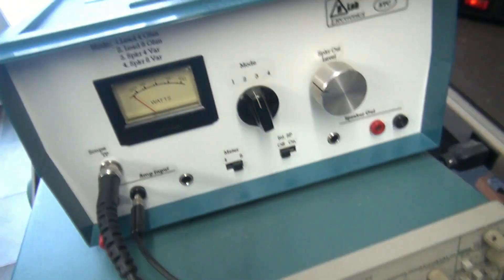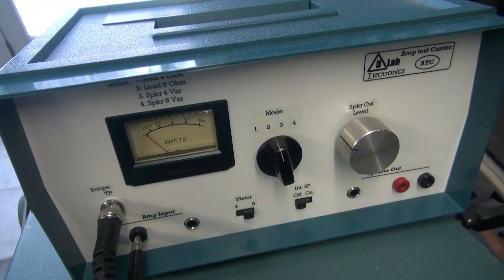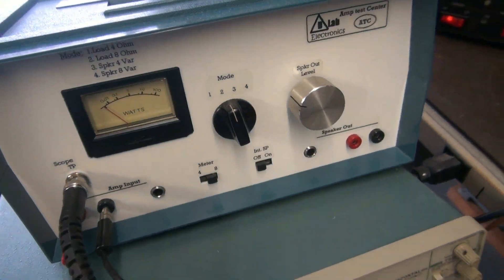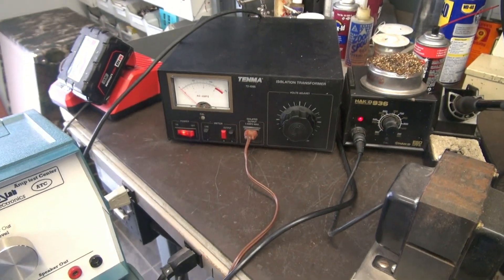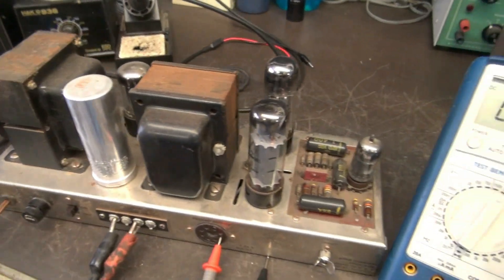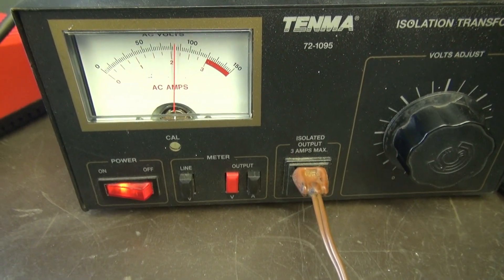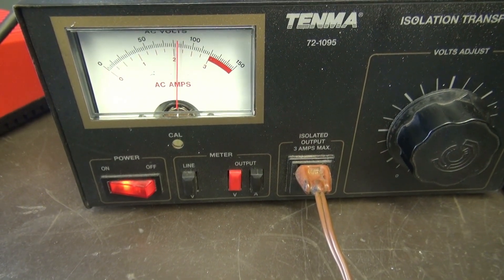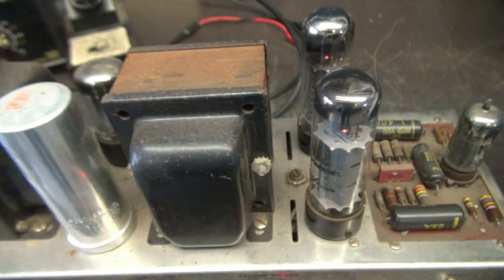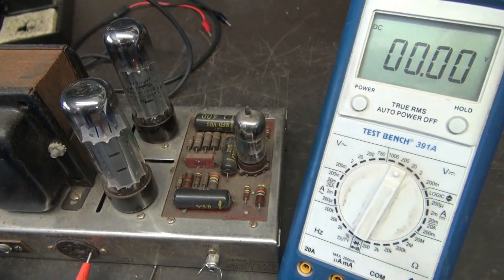And then this lead goes over here to the D-Lab audio test set, which provides a load. We've still got the Variac in line. So let's bring it up slow and see what we get.